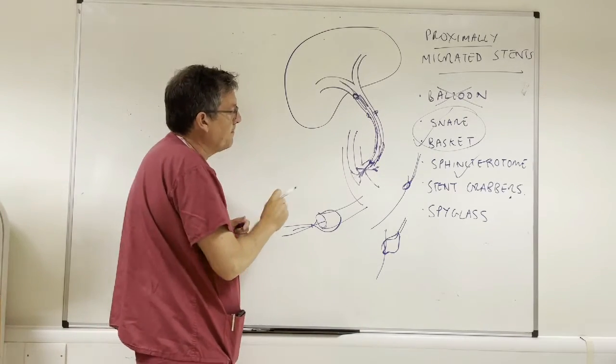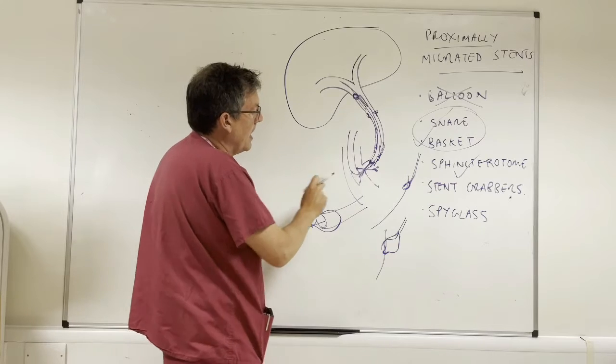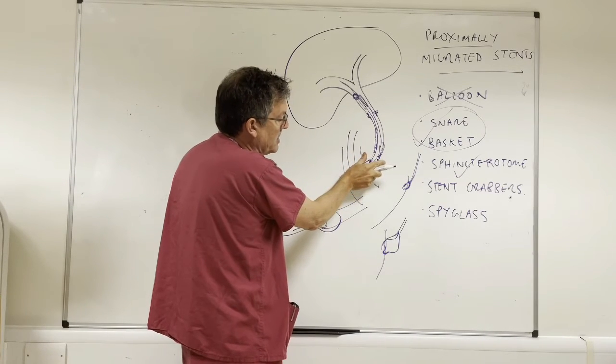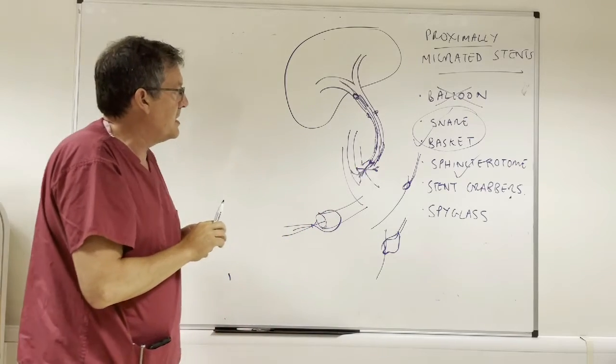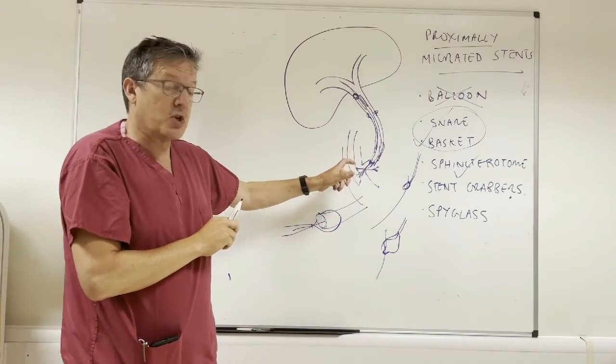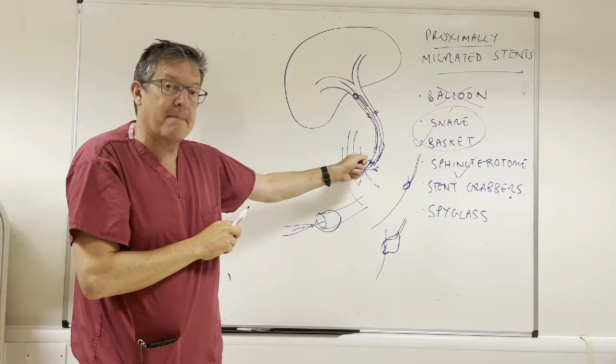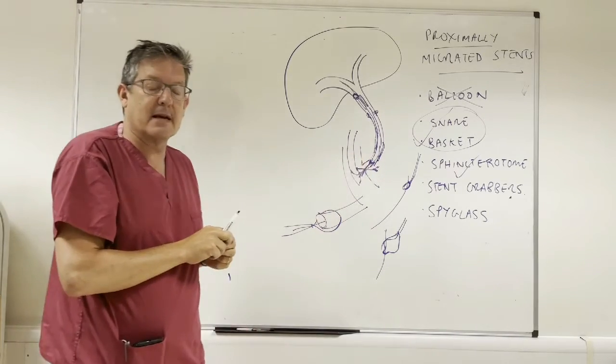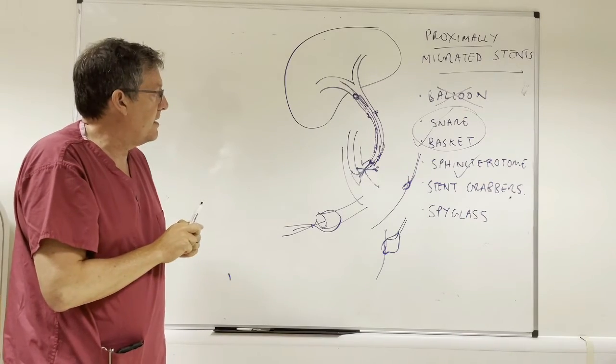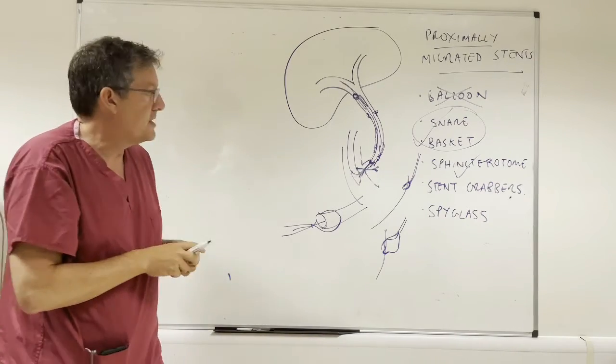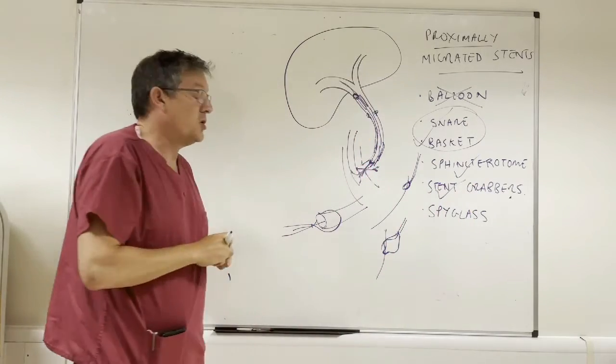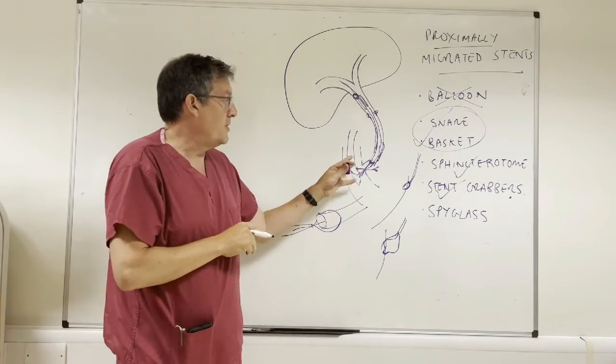But if again under fluoroscopy and a lot of care, if one can open the stent grabbers and gently advance onto the stent, you have a reasonable chance of closing the stent grabbers and grabbing a bit of that, grabbing the distal end of that stent and then drawing it out. So I think that's very much a technique worth doing and we've got a little video of using that technique for the removal of a proximally migrated metal biliary stent.